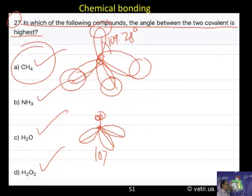Then go for water, still coming down. Then hydrogen peroxide, still coming down. So, highest is the bond angle. That is the angle between two covalent bonds is present only in methane.